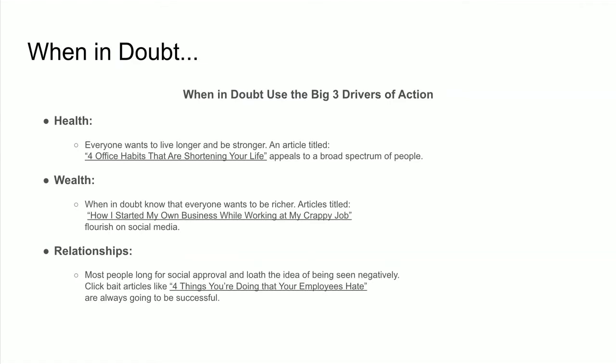If you're in an industry where there aren't a lot of likes and clicks, it's important to go back to one of the three big drivers of action. The first is health — everyone wants to be healthier and live longer. An article titled 'Four Office Habits That Are Shortening Your Life' appeals to a broad spectrum of office workers. Wealth — everyone wants to make more money and get a better job or start their own business. And last is relationships — most people long for social approval and loathe being seen negatively, so they fall into clickbait like 'Four things you're doing that your employees hate.'